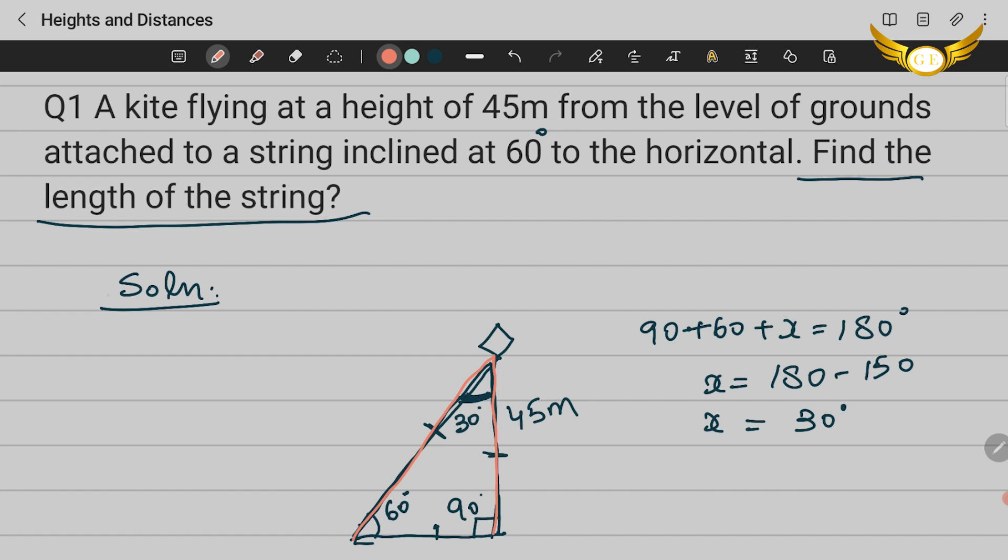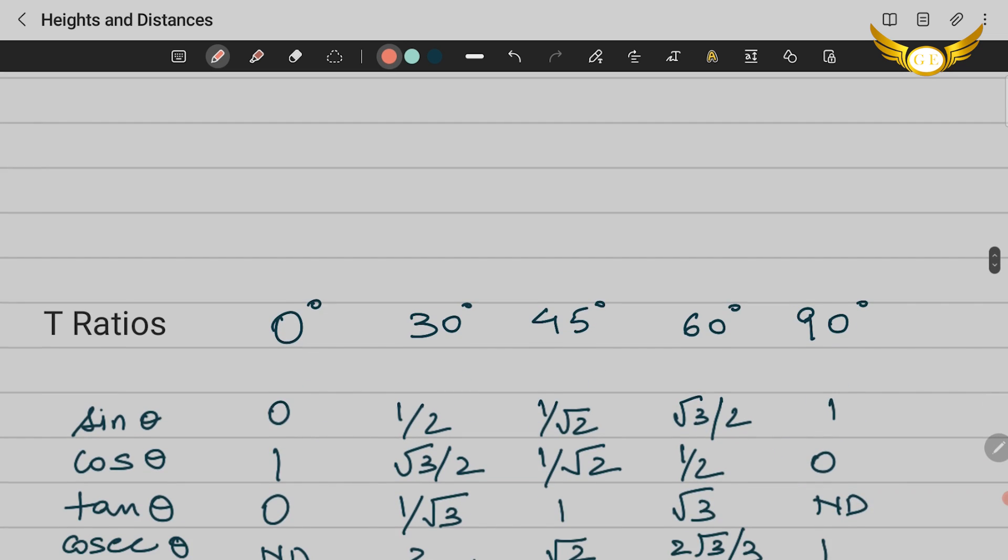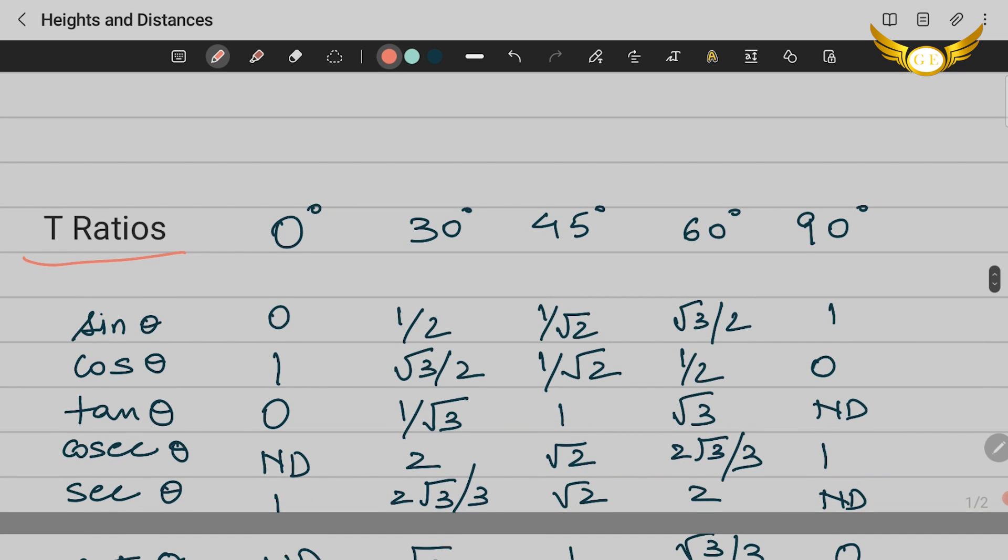So let us now see a table which we've all seen in school. These are the trigonometric ratios: sin θ, cos θ, tan θ, cosecant θ, secant θ and cot θ. These are the degrees: 0°, 30°, 45°, 60° and 90°. I'll read out the first row: sin 0° is 0, sin 30° is 1/2, sin 45° is 1/√2, 60° is √3/2 and sin 90° is 1. We all have studied trigonometry. This table is important.